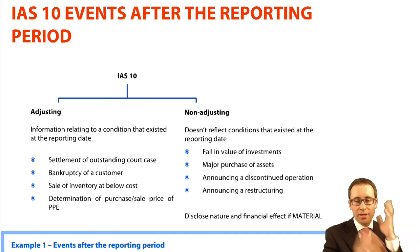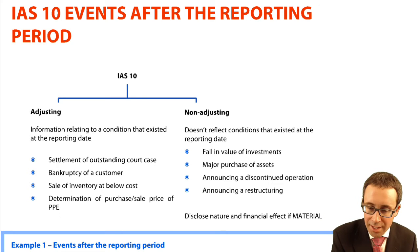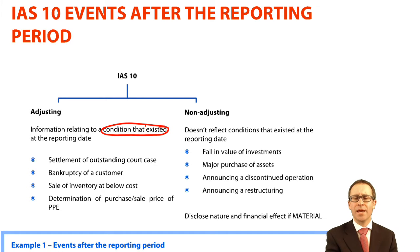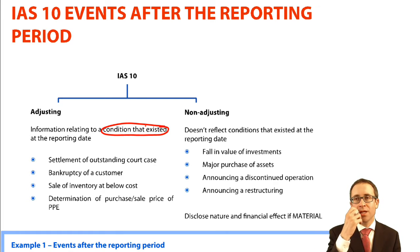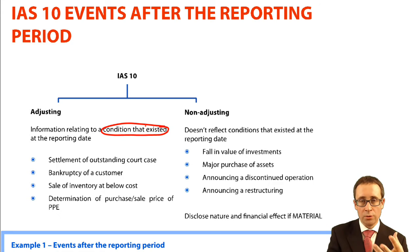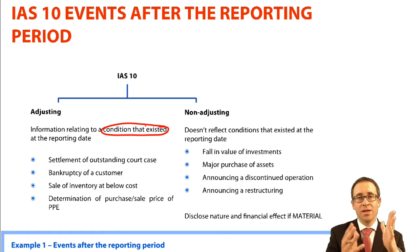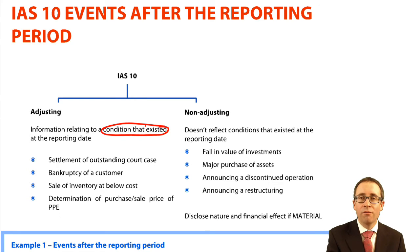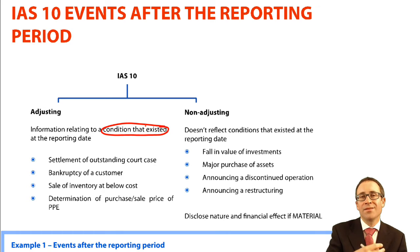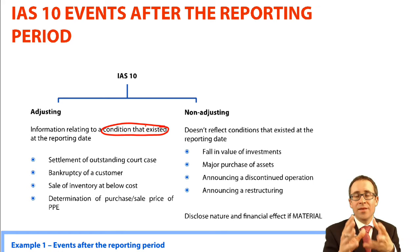So what do we mean by adjusting and non-adjusting? The key bit about adjusting is that the condition existed. For example, settlement of an outstanding court case — it could be that at the end of the year you were being sued, you didn't know the outcome, but something happened just before the financial statements were signed off giving evidence you were going to lose. The case was in place at the end of the year, so you will record that loss and provide for the settlement. Likewise, the bankruptcy of a customer after the reporting date gives evidence that the customer was in financial difficulty at the year end, so you should write off that debt. If you sell inventory at below cost, that inventory existed at the end of the year.